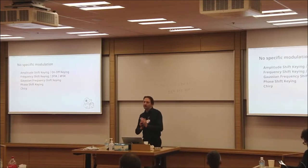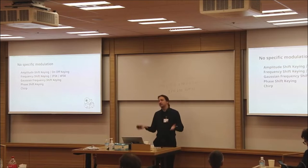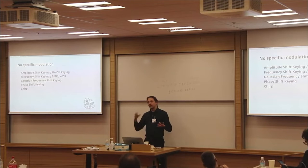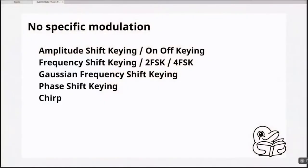When we say 'no specific modulation,' what is it? In order to pack your signal, you have some carrier and then you need to modulate it to send your signal. Basically, you have your data, you have the carrier, you combine them, and then you have radio waves bringing your signal to another point where you receive it. And there are a lot of different types of modulation. Some of them are very old, like amplitude shift keying or on-off keying — very simple, basically on-off transitions of the carrier.